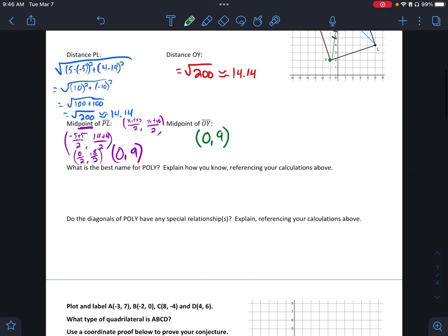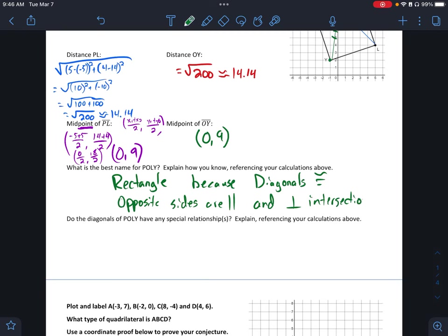So what this tells me then is we should be able to name our POLY. And we should know that this is a rectangle because diagonals are congruent, which is one of the things of our rectangle. We know that our opposite sides are parallel, and we have perpendicular intersections as well.